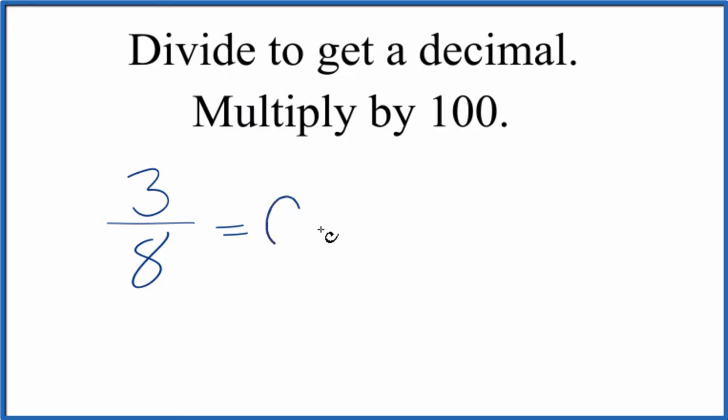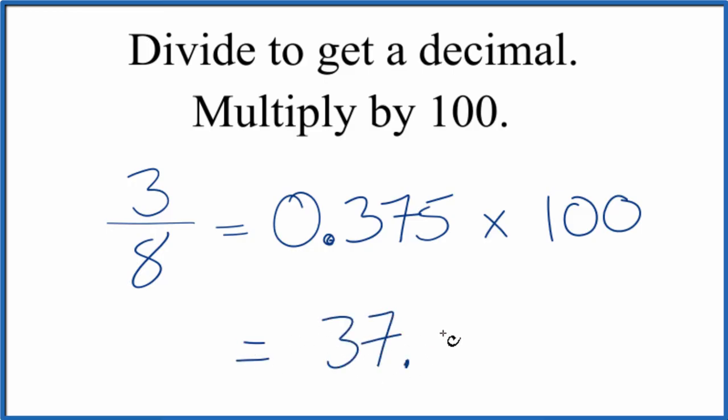And you'll end up with a decimal, 0.375. And we can multiply this by 100, and we'll get 37.5, and that will be our percent. So 3 is 37.5% of 8.